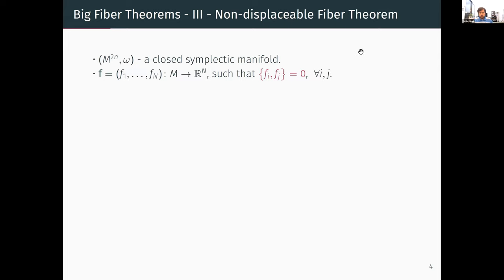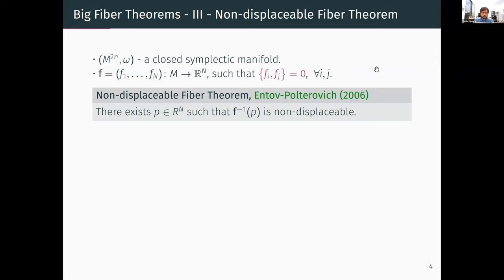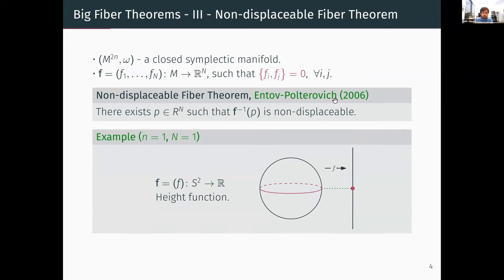The non-displaceable fiber theorem due to Entov and Polterovich looks on the surface very different. Given a closed symplectic manifold and a map into R^n such that any pair of components Poisson commutes (Poisson bracket is zero), the theorem states there exists a point whose fiber is non-displaceable. For example, for the height function on the sphere, the theorem shows the equator is non-displaceable — any fiber can be shown non-displaceable from the existence guarantee.